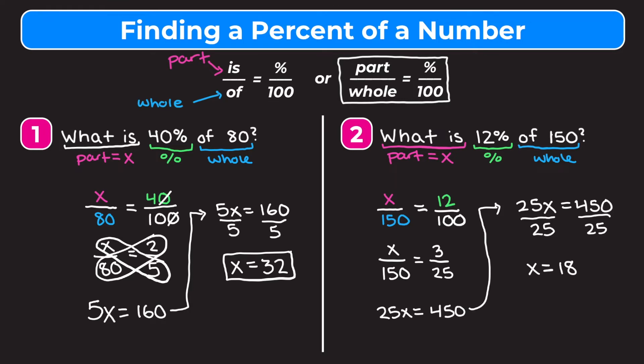So 12% of 150 is equal to 18. Let's mentally check: 10% is just a tenth of the number, so 10% of 150 is 15. So 12% should be a little bit more than that, and 18 is a little bit more than 15. So our answer makes sense.